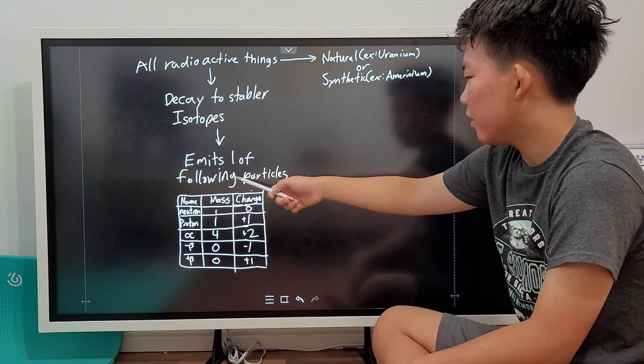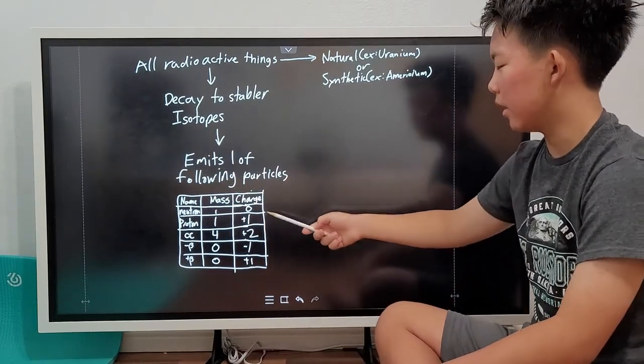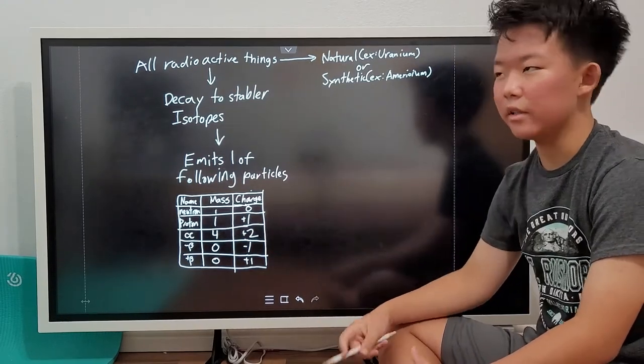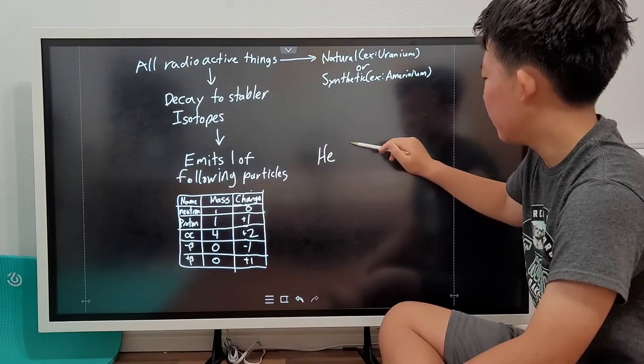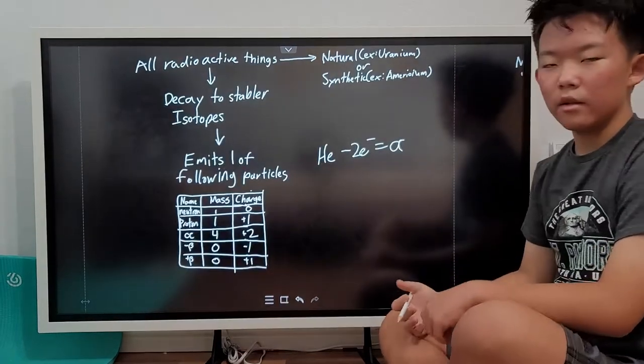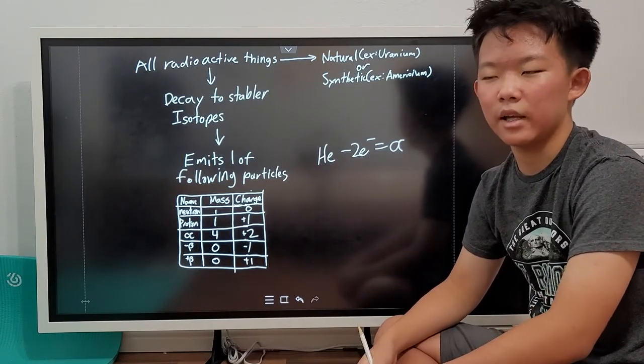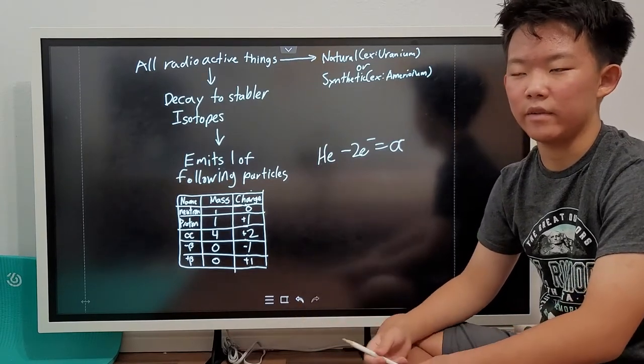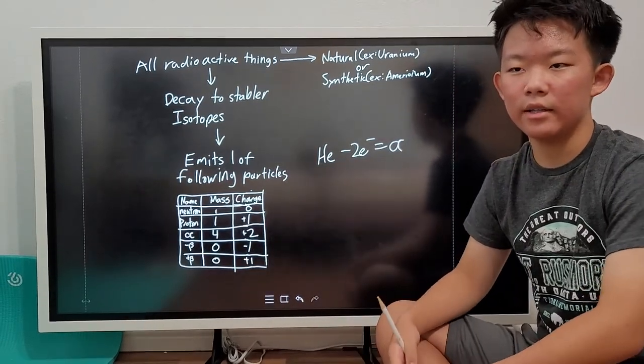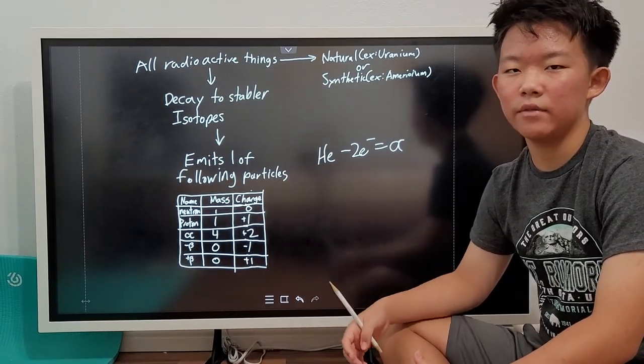As they decay, they emit one of the following particles. The neutron, you probably know this guy. Proton, again, you should probably know. And then there's the alpha particle. The alpha particle is basically just a helium atom, but without its two electrons. The beta particle is not too different from an electron, except instead of orbiting an atom, it got ejected by a radioactive decay. And lastly, the positron. The positron is kind of like the antimatter version of the electron, and it has the same properties, except a positive charge instead.